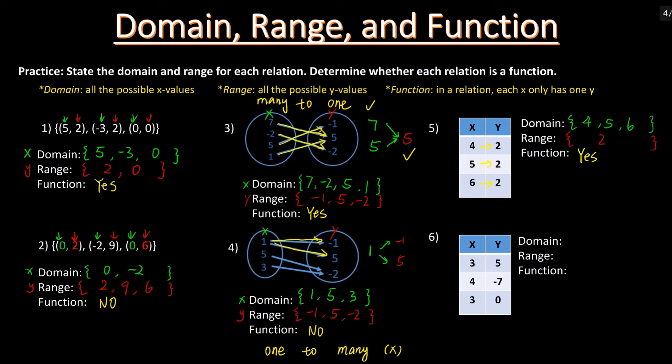Question 6. The domain is {3, 4} — we only write the repeated number 3 once. The range is {5, -7, 0}. Since 3 maps to 5 and 3 maps to 0, the x-value 3 has two y-values. It's a one-to-many situation, so this relation is not a function.